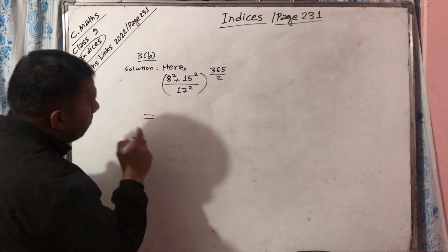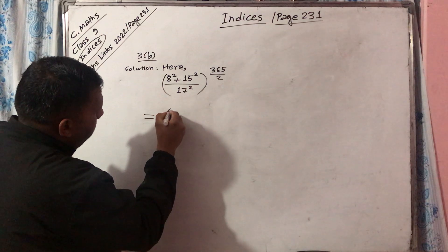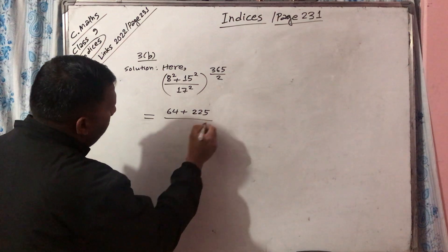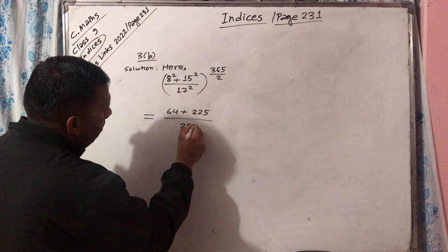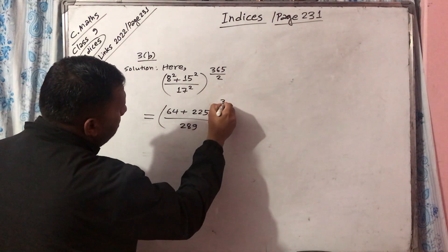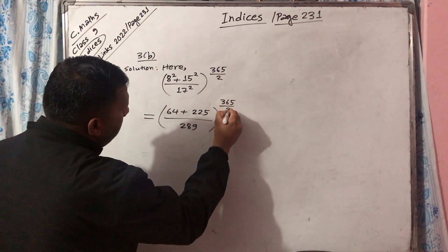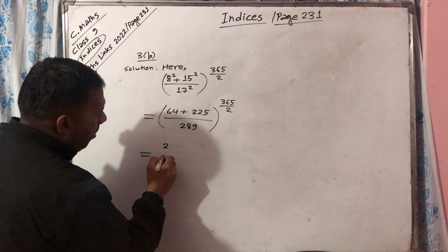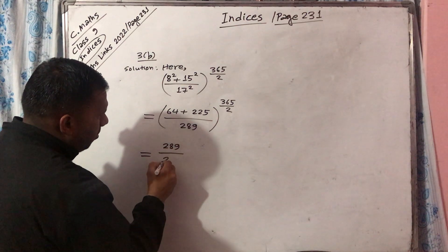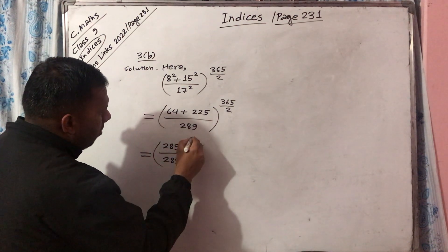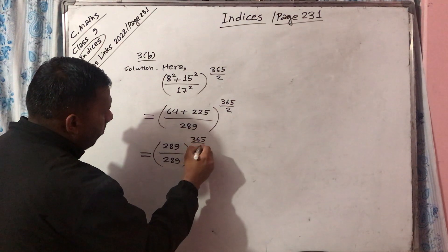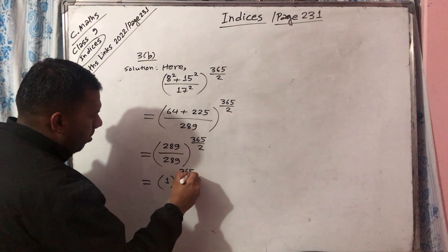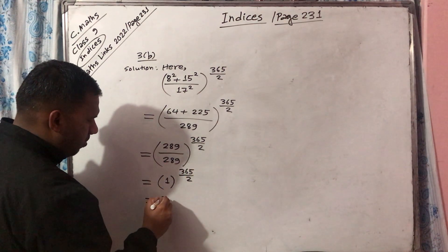This is equal to: 8 square is 64, plus 15 square is 225, whole upon 17 square is 289, this whole power 365 upon 2. Now 64 plus 225 equals 289, whole upon 289, whole power 365 upon 2. That is 1 to the power 365 upon 2, which equals 1.